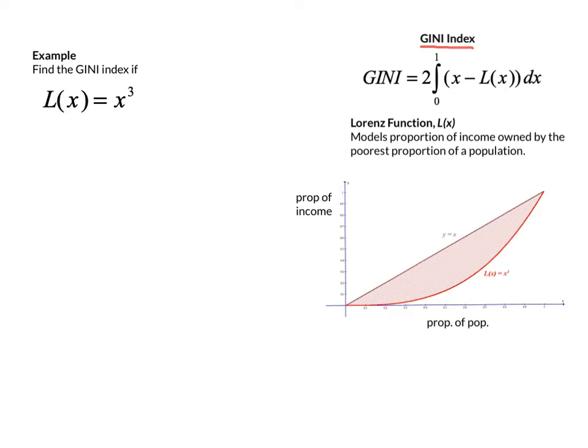...is given as 2 times the integral of x minus L of x. L of x is called a Lorenz function, and it is a function that models proportion of the population to proportion of income owned.